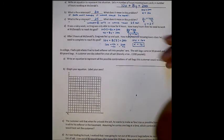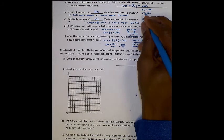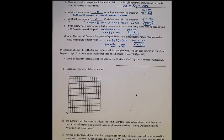Just restating that our equation can be used to find out all the places where the combinations where working at McDonald's or working at mowing a lawn gives him $200. And for any equation that we make for a line, any two points that make the equation true are options for us. In college, I had a job where I had to load softener salt into people's cars. Salt bags came in 50-pound and 80-pound bags. A customer one day asked for a ton of salt, literally a ton, 2,000 pounds. Write an equation to represent all the possible combinations of salt bags this customer could receive.